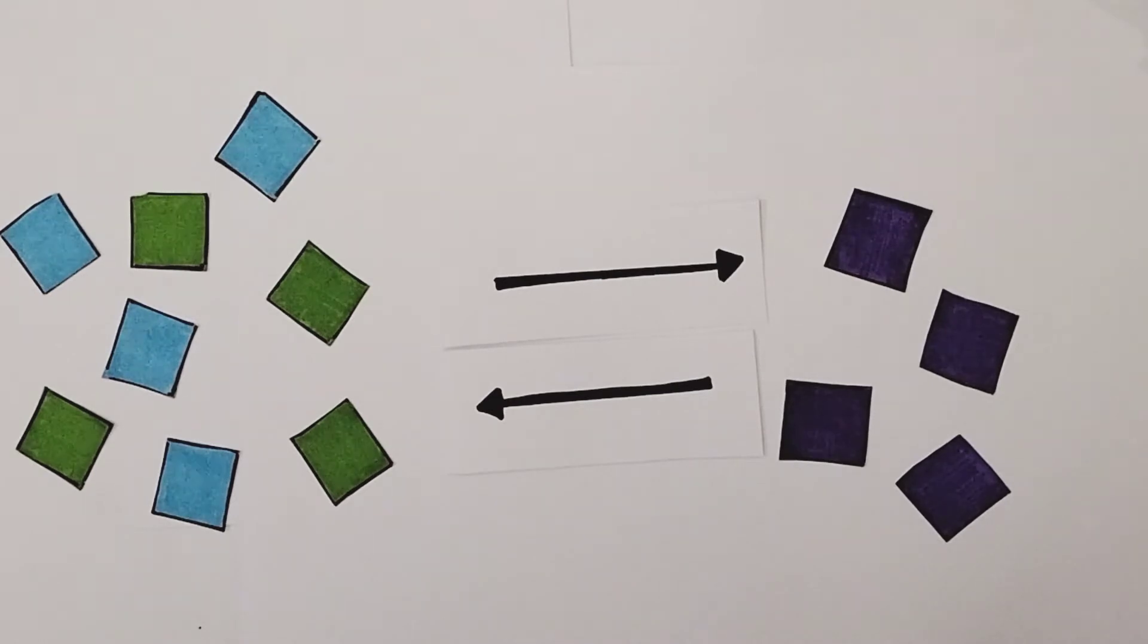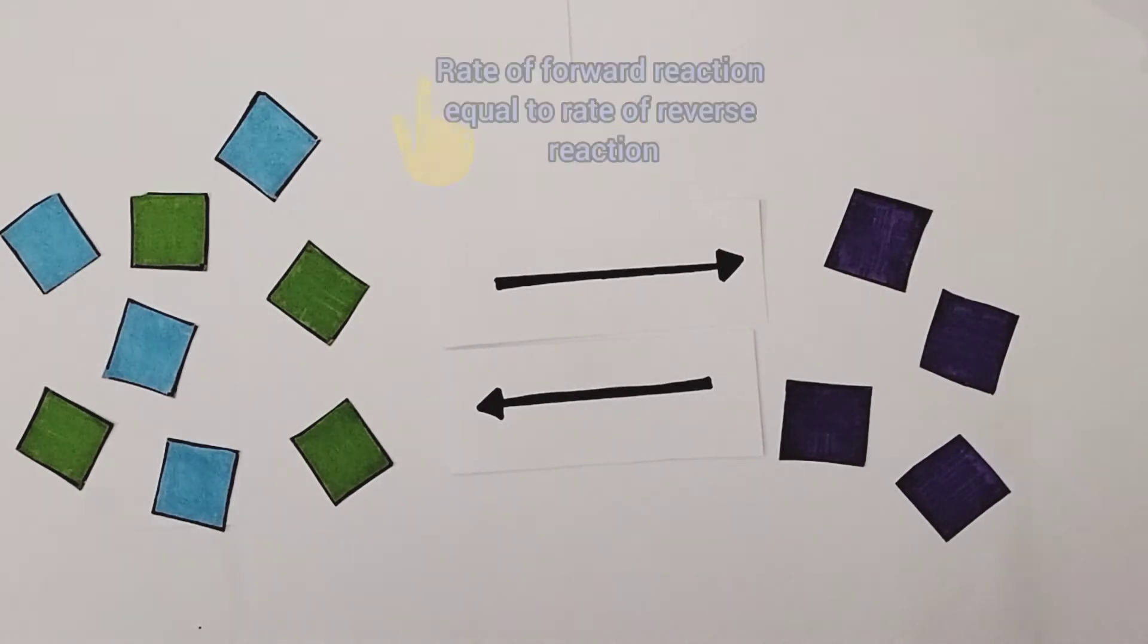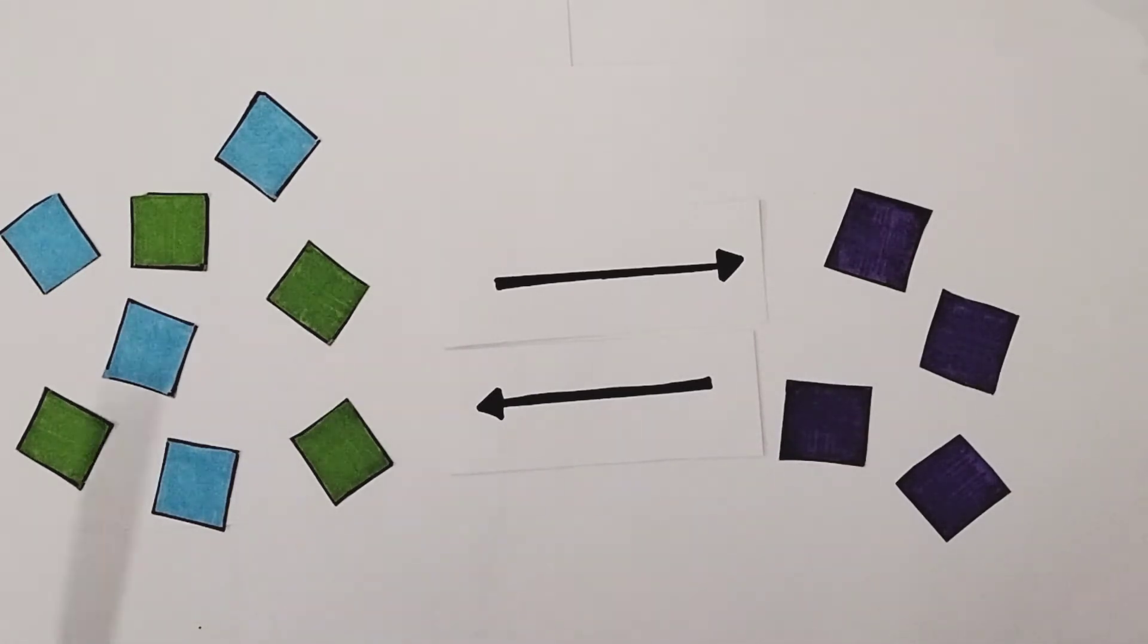I also want to emphasize how this animation perfectly encapsulates the principles of a dynamic equilibrium, because the rate of the forward reaction is now equal to the rate of the reverse reaction, but the concentrations of reactants and products cannot be defined as equal to each other. If you look at this situation, there are more reactant molecules than there are product molecules.